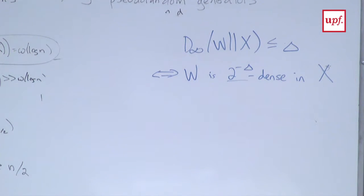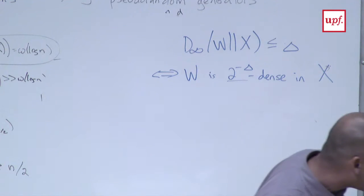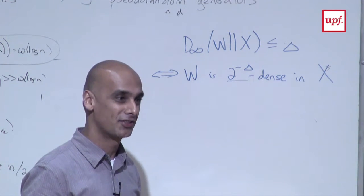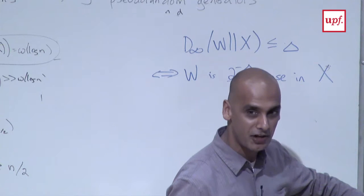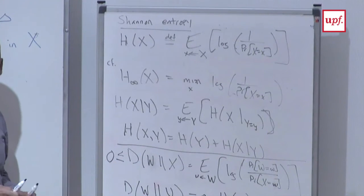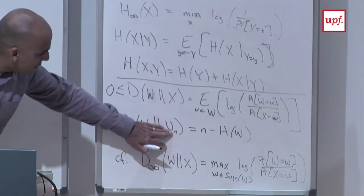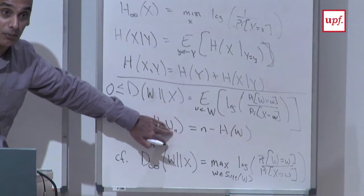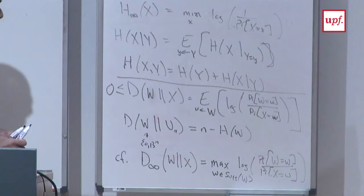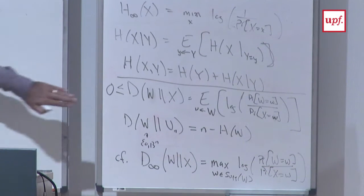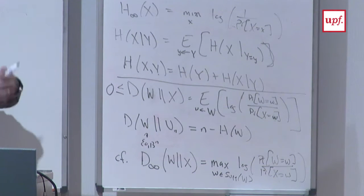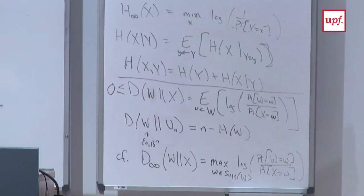Think of this average-case divergence as a version of measuring density. How are we going to use these notions to fix the problem — to get something that better captures the hardness of inverting a one-way function? The claim is that for every efficient poly-size adversary A, if we look at the divergence from (f(x), x) to (f(x), A(f(x))), this is going to be at least super-logarithmic in n.